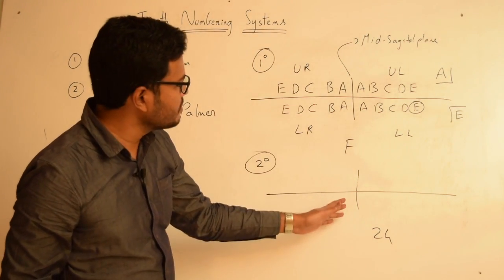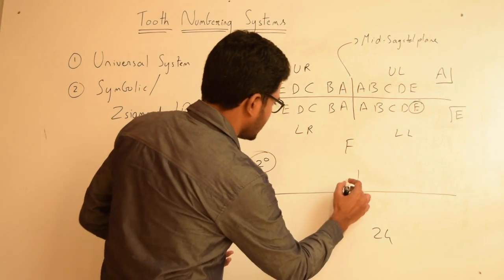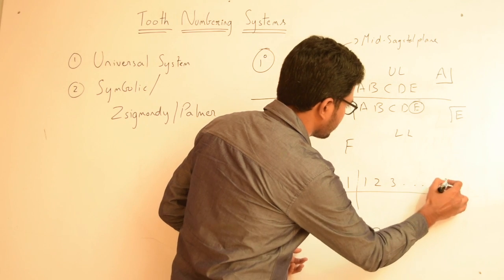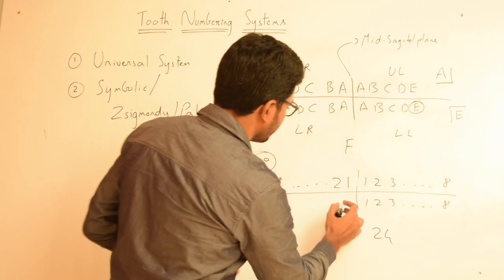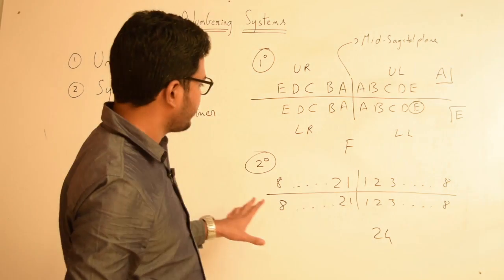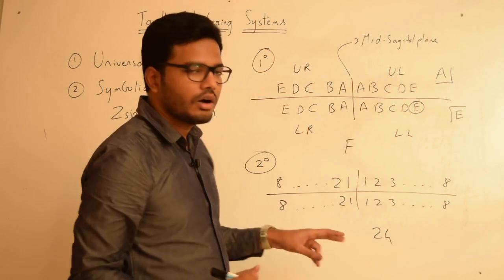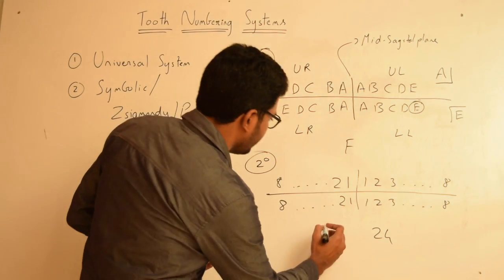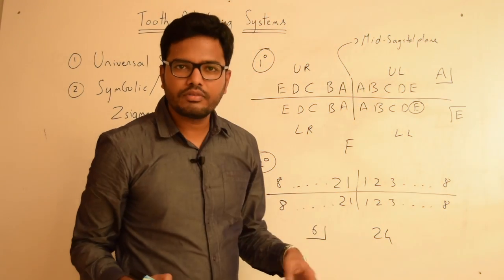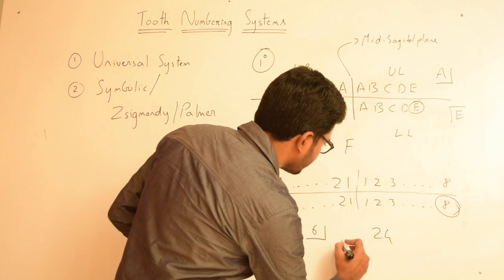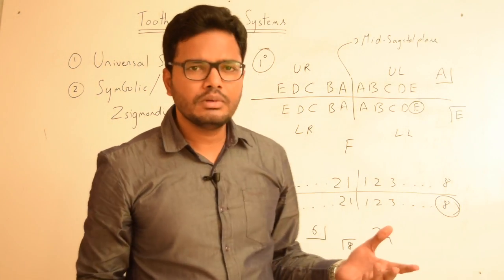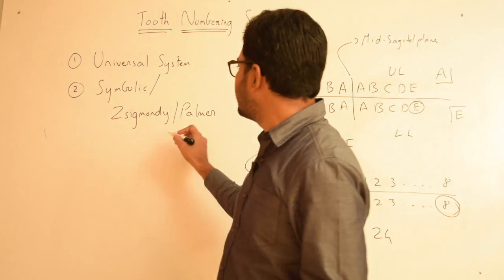In case of permanent dentition, the rules are the same, however we use numbers instead of alphabets. We start from the midline and proceed through all four quadrants. If I want to represent an upper right first permanent molar, it is represented as '6' with a reverse-L symbol. If I want to represent a lower left third molar, it is represented accordingly. This is the Sigmondi Palmer System, also called the Symbolic System, introduced by Sigmondi and Palmer in 1861.